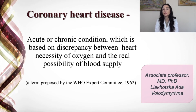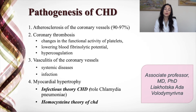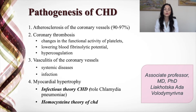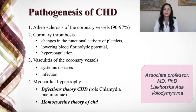What is the pathogenesis of coronary heart disease? First of all, it is atherosclerosis of the coronary vessels. It could also be coronary thrombosis, vasculitis of the coronary vessels, myocardial hypertrophy, and there is also an infectious theory and a homocysteine theory of coronary heart disease.